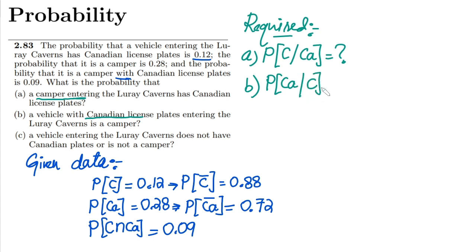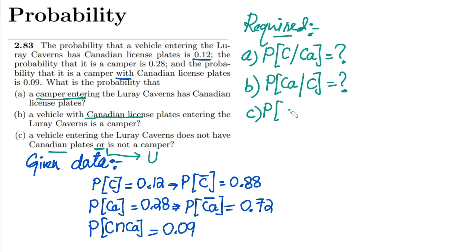In part C, a vehicle entering Luray Caverns does not have Canadian plates or is not a camper. The word 'or' here represents the union operation. So we have to find P(C' ∪ CA'). These are all the given and required data written out, so now we can proceed to solve.